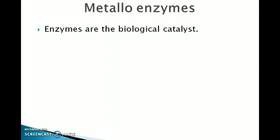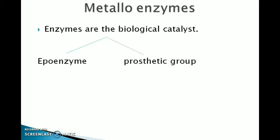Enzymes are composed of a protein structure called the apoenzyme and a prosthetic group containing a simple or complexed metal ion.